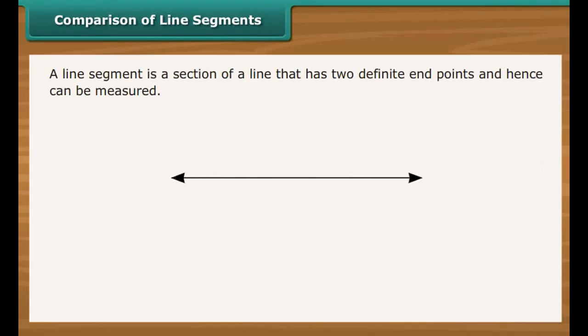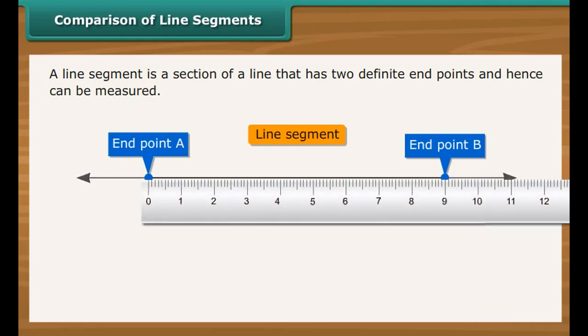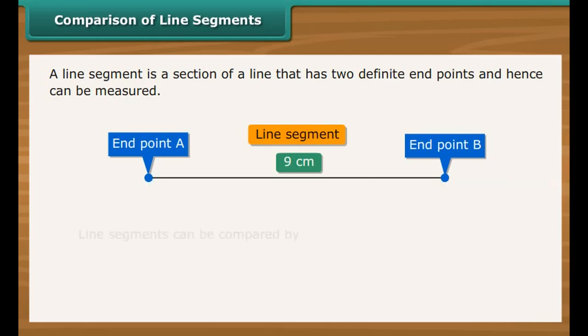Comparison of line segments. A line segment is a section of a line that has two definite end points and hence can be measured. Line segments can be compared by observation, tracing, or measurement. Let us look at each technique in detail.